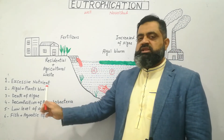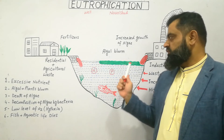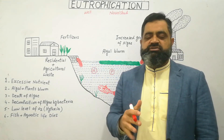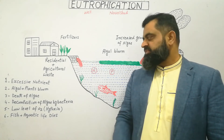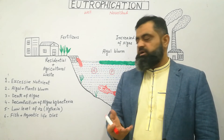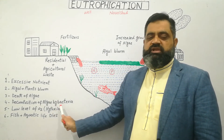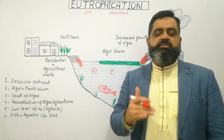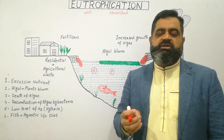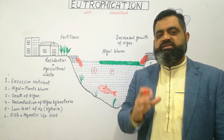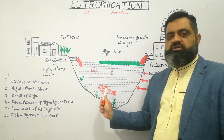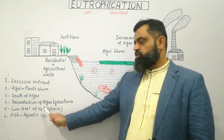Step three: after the formation of so much algae on the water surface, there is no light penetration, and algae and plants start to die. Step four: when they die, bacteria increase in number and start decomposition of the algae. This process is carried out by aerobic bacteria. When they decompose algae and plants, they consume oxygen, resulting in a loss of oxygen from the water — known as hypoxia, or low oxygen level.